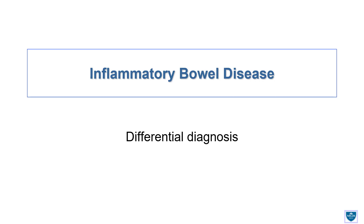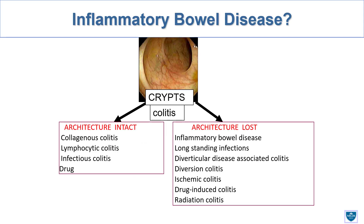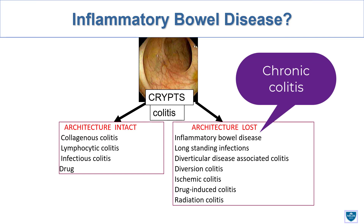This is part two of this lecture on inflammatory bowel disease. In the next five minutes or so I will cover the differential diagnosis of inflammatory bowel disease. From part one we talked about the histologic features needed to make a diagnosis of chronic colitis, and the feature I rely on the most is basal plasmacytosis. When you make a diagnosis of chronic colitis, the first thing to think of in the United States is IBD, but before a definitive diagnosis, these are the conditions you need to exclude — and that is what we are going to do for the rest of this talk.